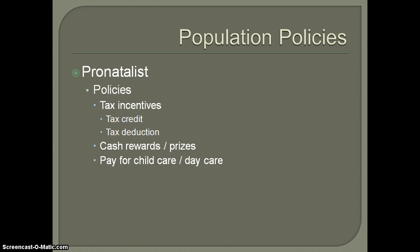When we look at pronatalist policies, they're not always incredibly obvious. Some very obvious ones are cash rewards or prizes you might get for having children. There have been contests in Russia where if you have a child on a certain day, you receive a cash prize. I've also heard about certain countries giving their workers a holiday to encourage people to have children. So those are very obvious examples that we would consider to be pronatalist because they're actively encouraging people to have children.